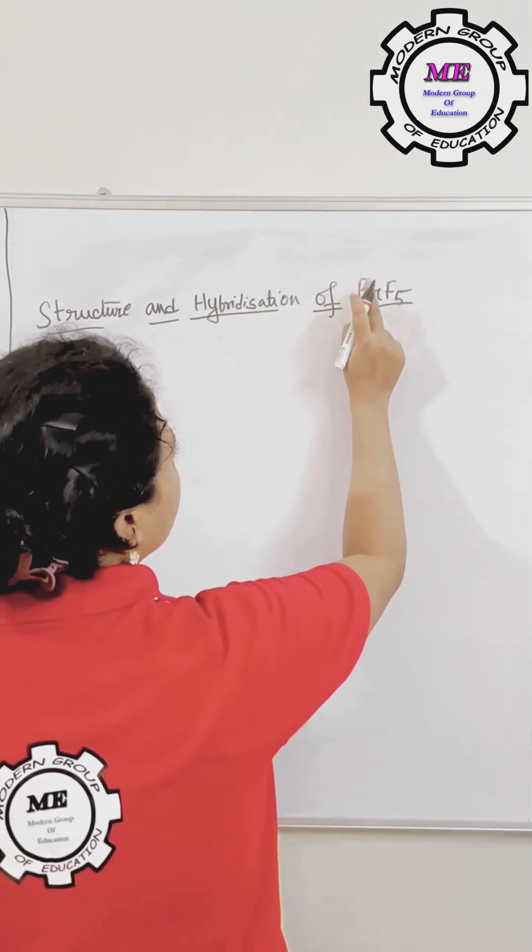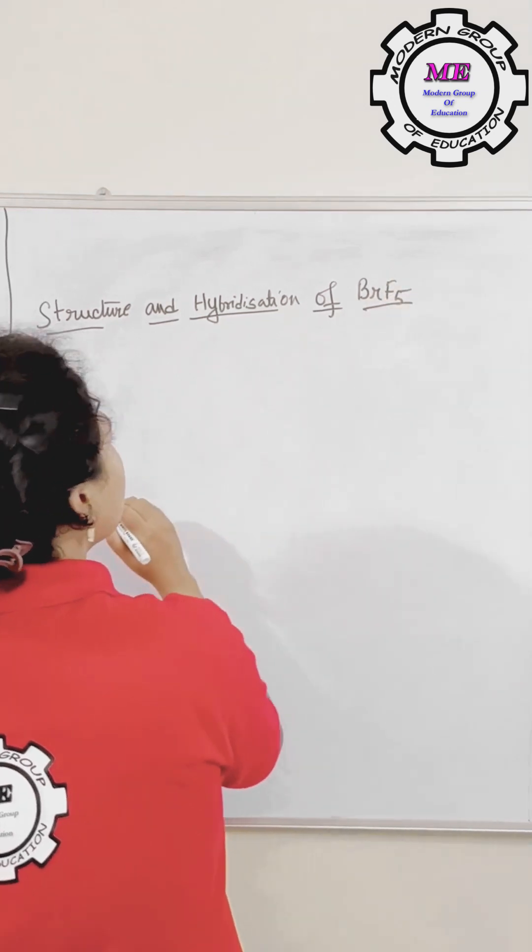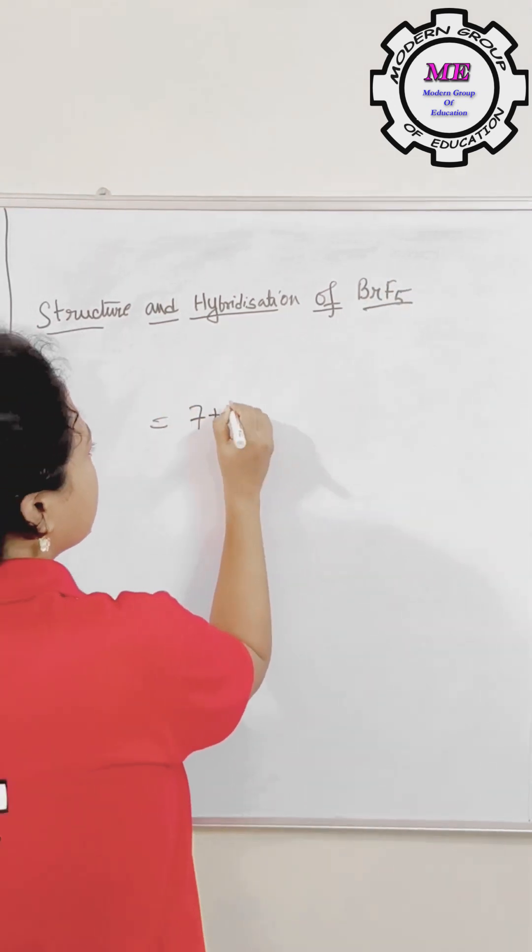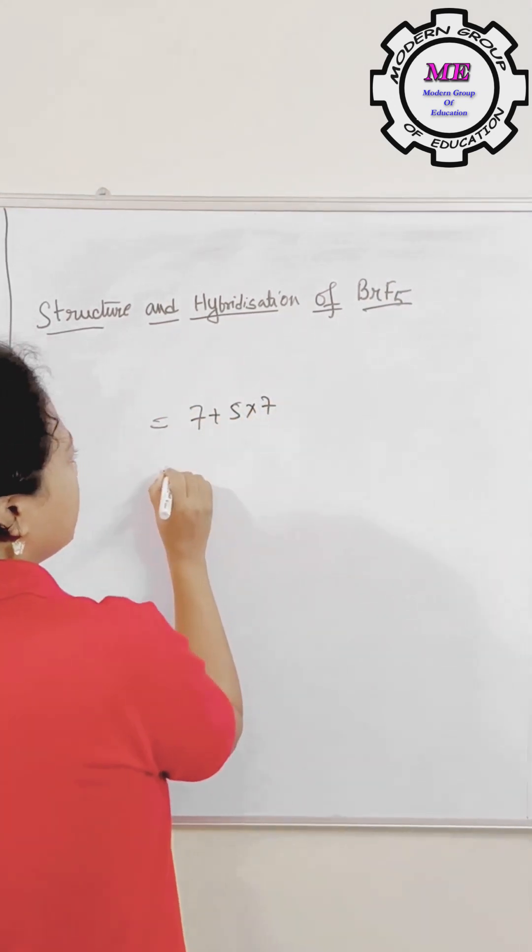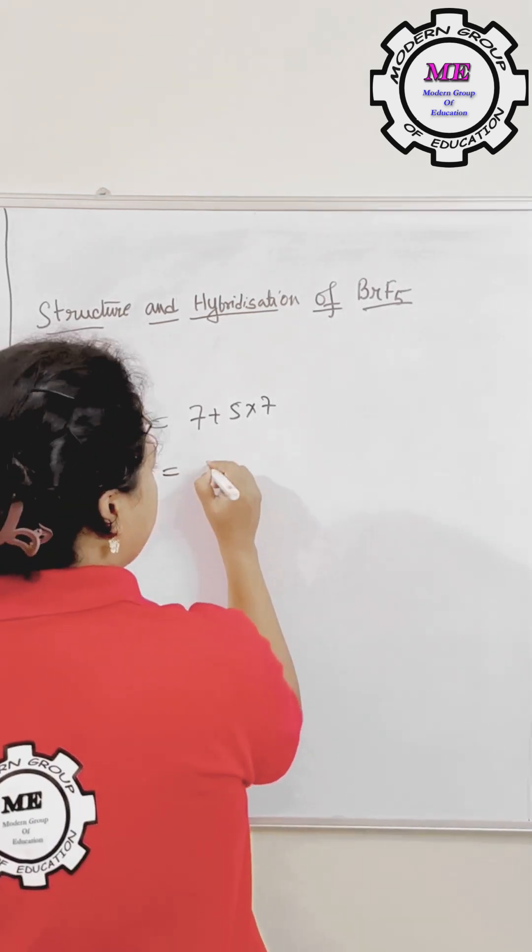Valence electrons if you add: bromine has 7 valence electrons, F also has 7 valence electrons. So 7 plus 5 into 7, that will be 35 plus 7, 42.